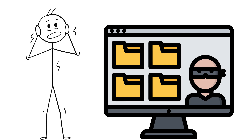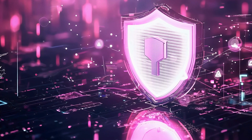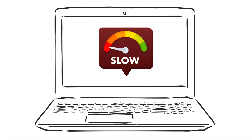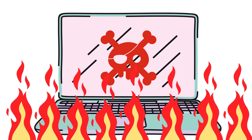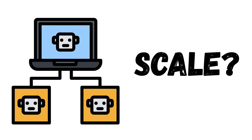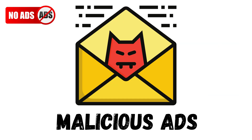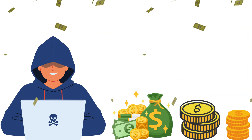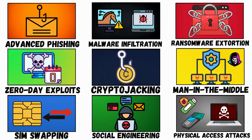Method 5: Cryptojacking. Hackers hijack your computer to mine cryptocurrency. Malware runs silently in the background using 100% of your CPU and GPU — your PC slows to a crawl, overheats, and hardware dies prematurely. A single cryptojacking script can infect thousands of devices via malicious ads or unpatched servers, earning hackers $100,000+ per month from your electricity.